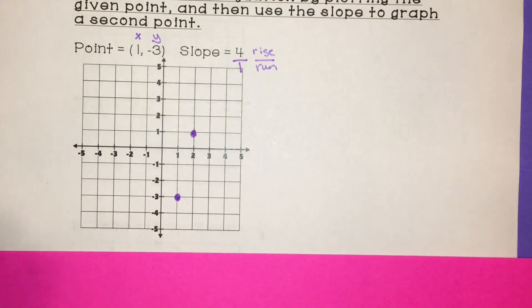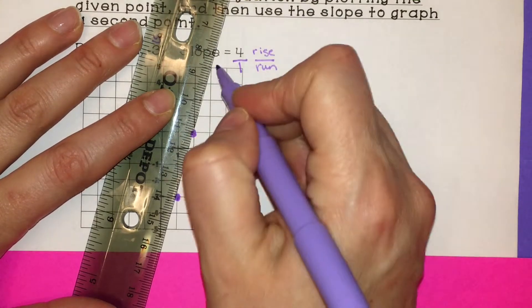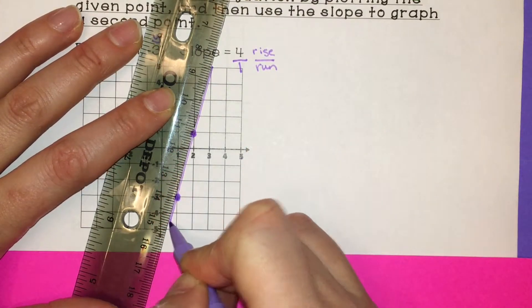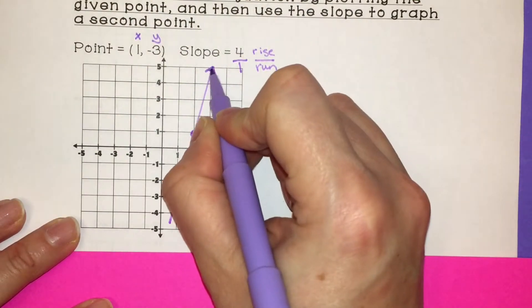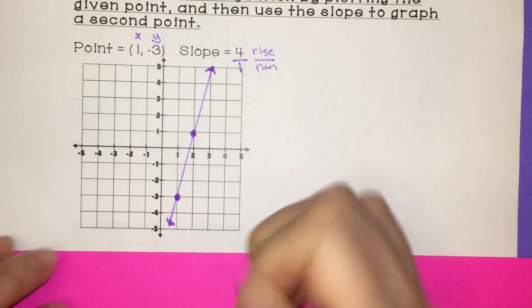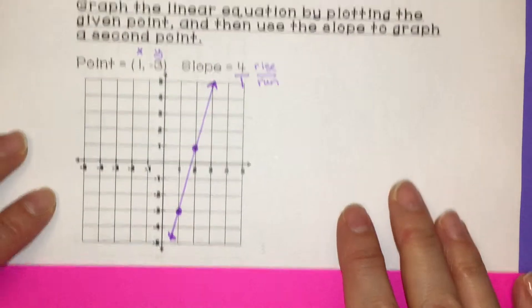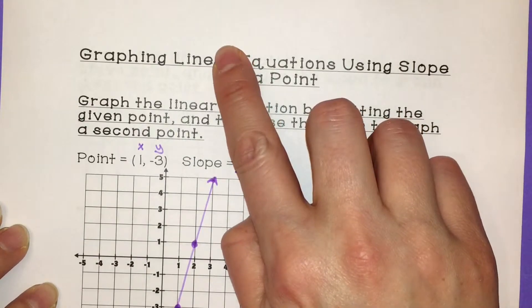Okay, so then we're going to connect these. And this is our graph of our linear equation that goes through the point (1, -3) with a slope of 4. And it continues going in both directions. See, it's a perfectly straight line. That's how we know it's linear. And that word linear even has the word line in it.